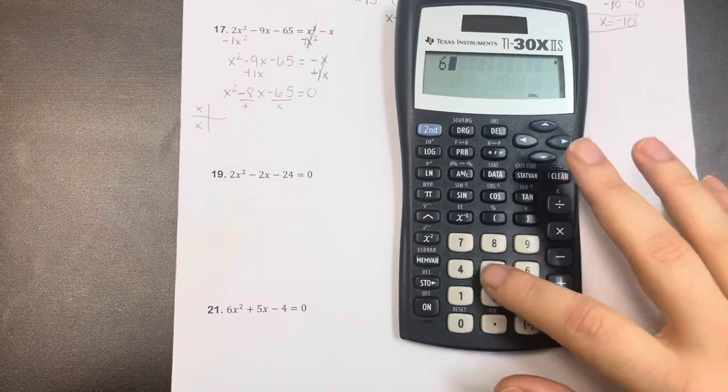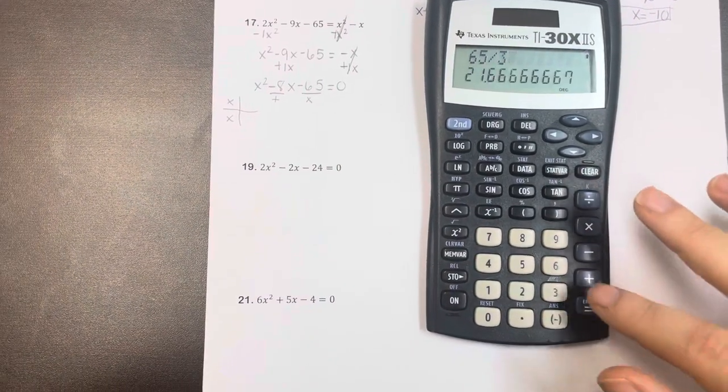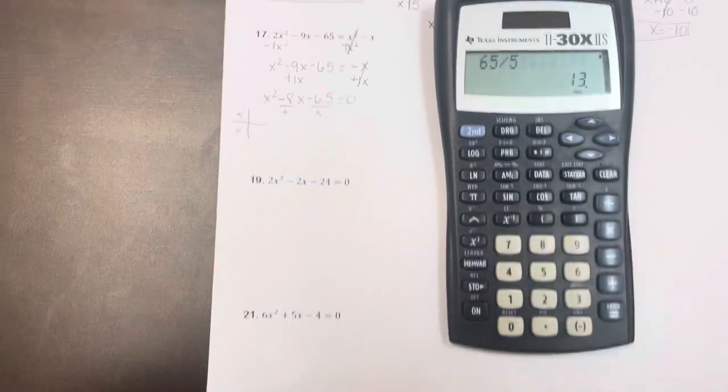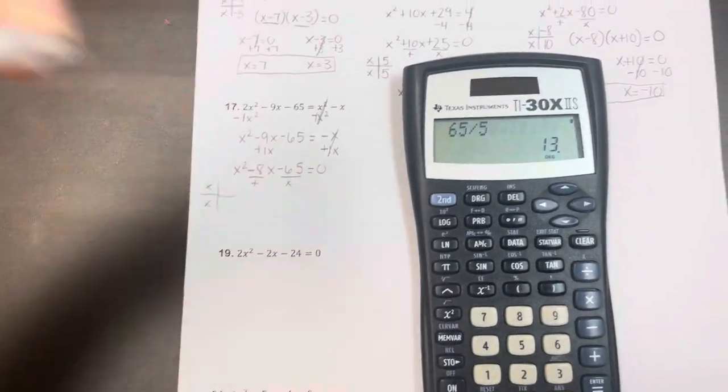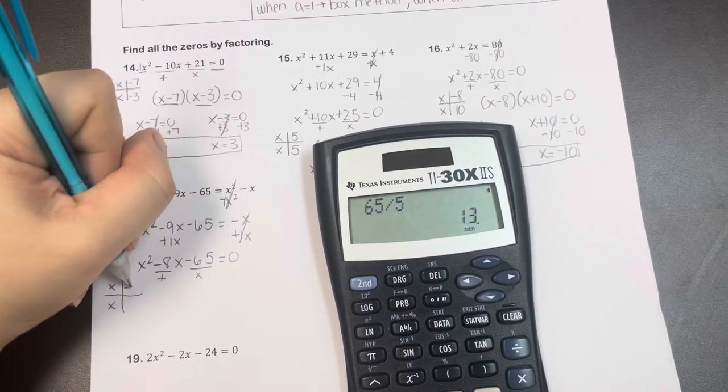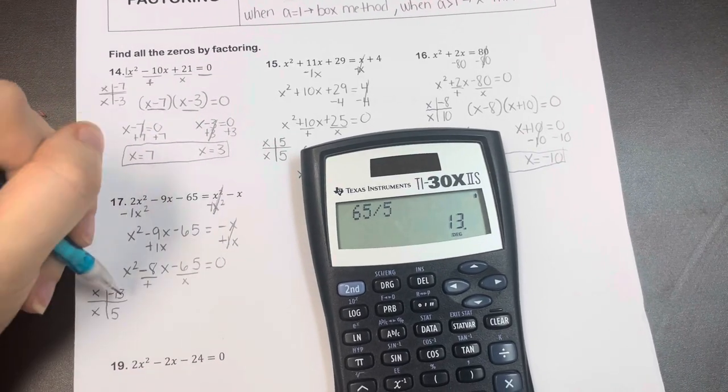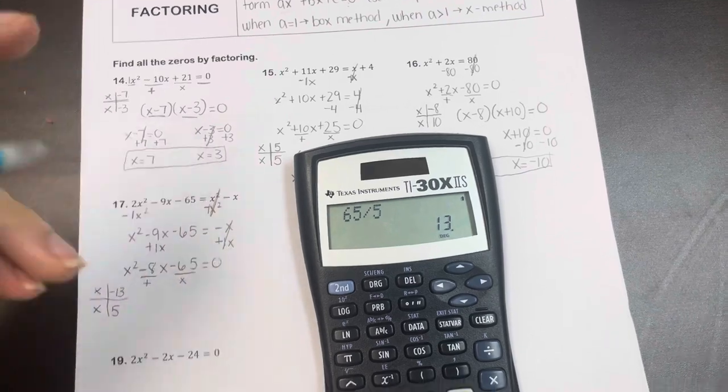So I'm going to use my calculator. It looks like it's going to be 5 and 13, but it's going to be a negative 13 times a 5 is a negative 65, and a negative 13 plus a 5 is a negative 8.